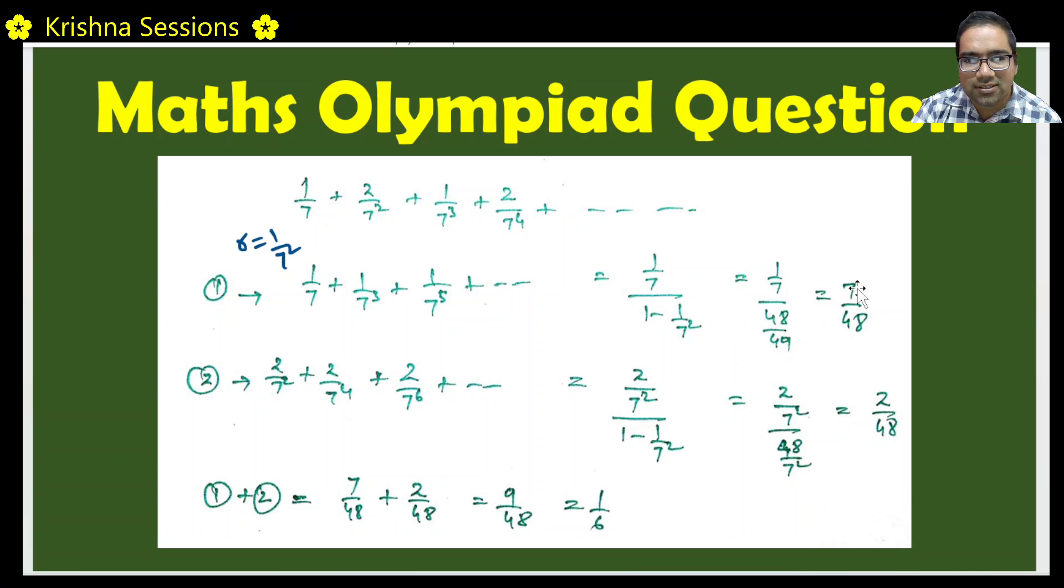This is the denominator which turns out to be 7 by 48. Why? 7 goes 7 times and this 7 will become numerator 7 by 48. This is the sum of first, third, fifth, seventh, ninth terms.